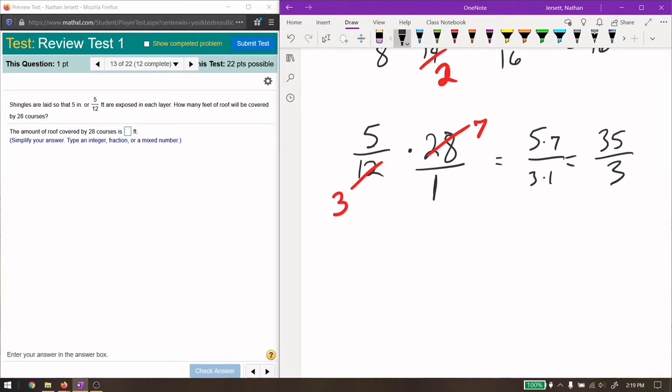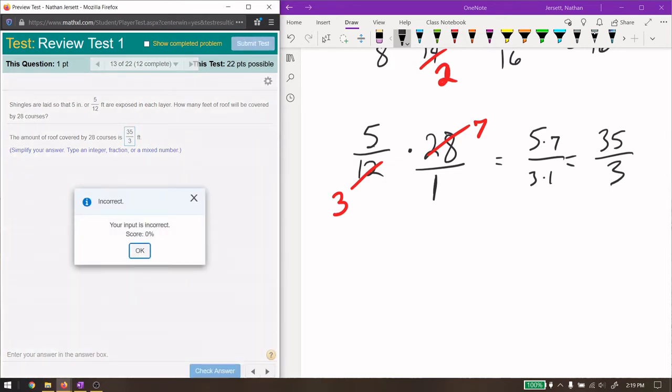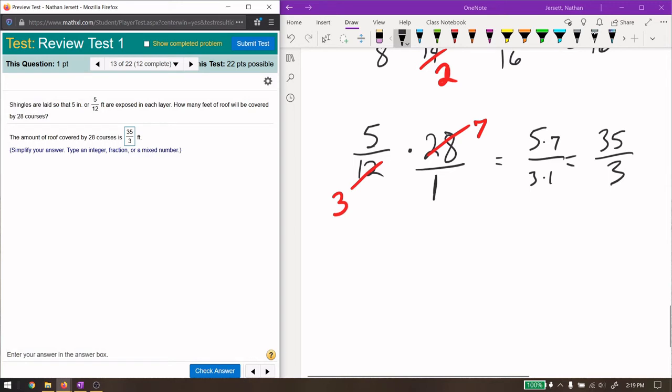And it wants an integer, a fraction, which this is technically a fraction, but we can test to see if it accepts that. Typically, we have to give it, yeah, it wants a mixed number. It should have said proper fraction here, but it didn't. So we need to make sure this is a mixed number. How many times can 3 go into 35? It can go in there. 3 times 11 is 33. So 11 times, 35 minus 33 is 2. So 11 and two-thirds.